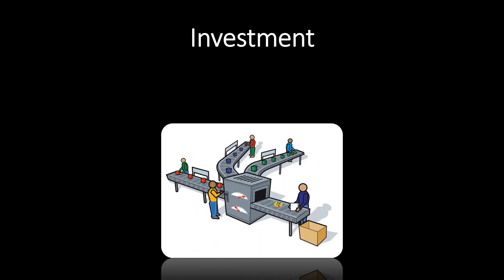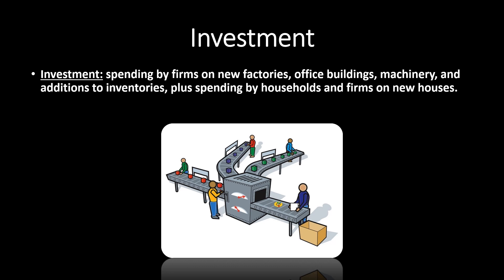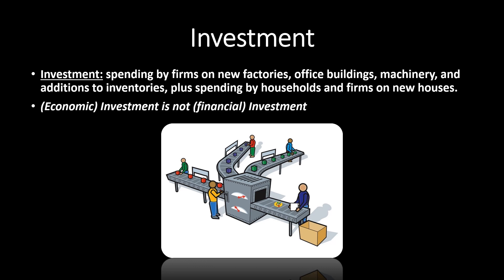The second component is investment. The definition is spending by firms on new factories, office buildings, machinery, and additions to inventories — but also by households and firms on new houses. Don't think of this economic investment as financial investment; it's not stocks and bonds — those are not included in GDP. Think of it as: I'm a business and I want to buy something that's going to help me produce other goods and services.